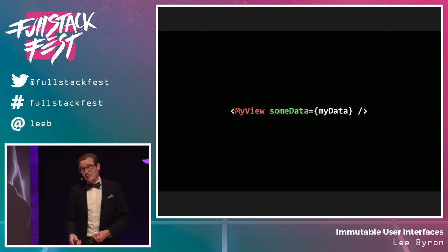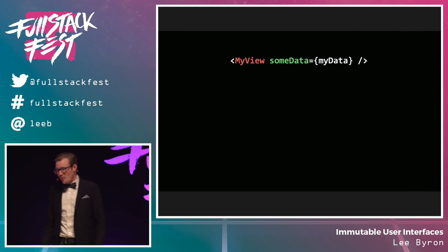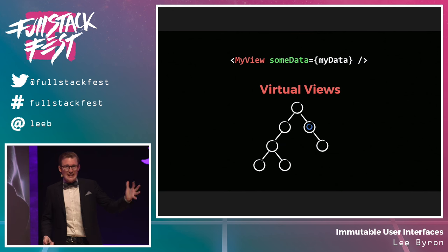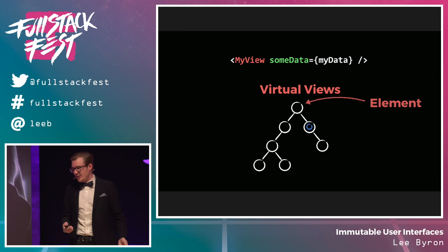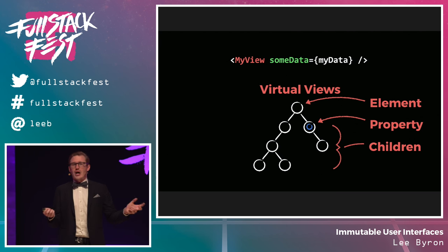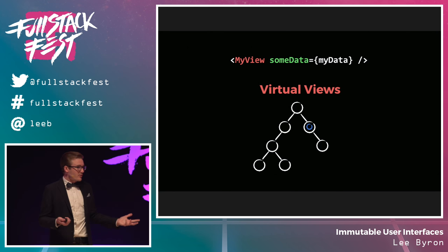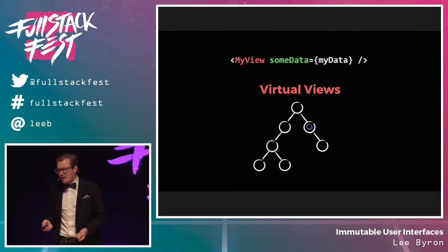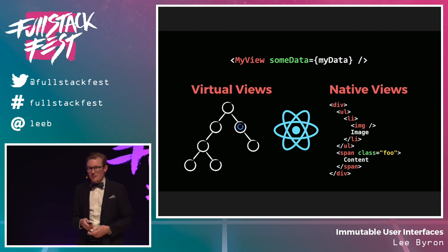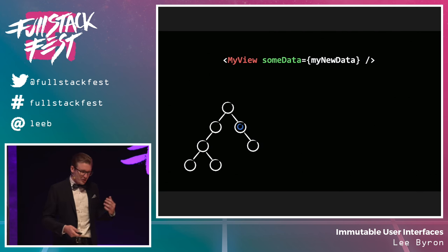In my example, I'll call this MyView with some data. When we render this component, we get back virtual views — a representation of what we ultimately want to see. They have the same structure — elements, properties, children — but they're just in-memory objects, not on screen yet. The first time we render these components, our component library takes the virtual views and creates the actual underlying native views on whatever platform we care about.